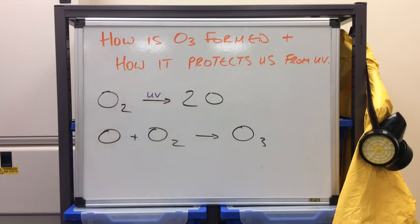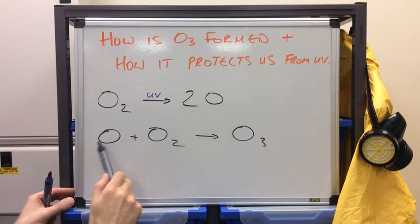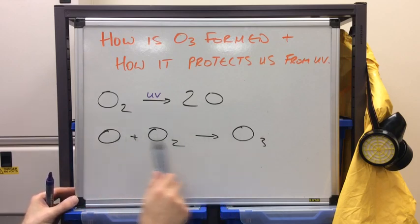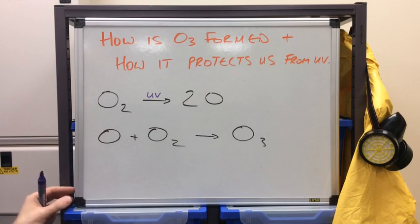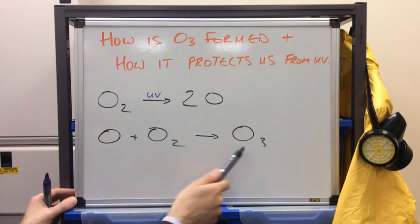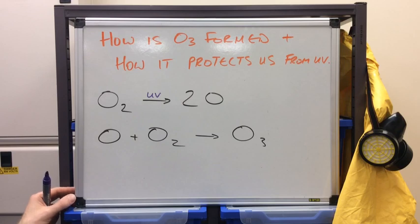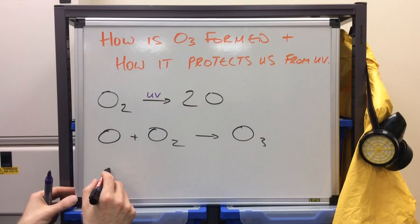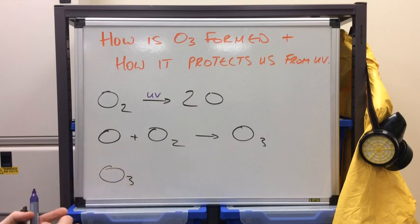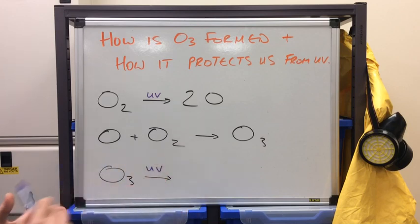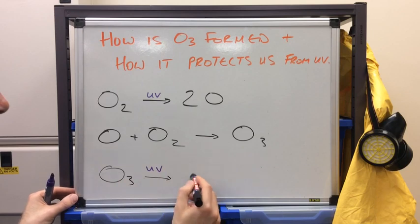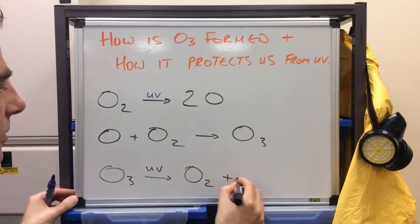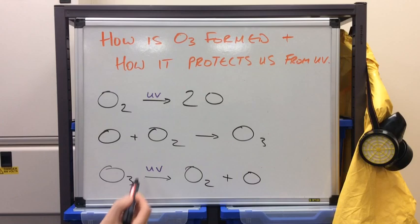If we come on to how it protects us. Now, if we think about this reaction here, if this was the only process that took place, we'd be in trouble because all of the oxygen would eventually be converted into ozone. So the other reaction that takes place is actually ozone has an ability to absorb UV radiation. And again, high energy. So this will split ozone into O2 and O.